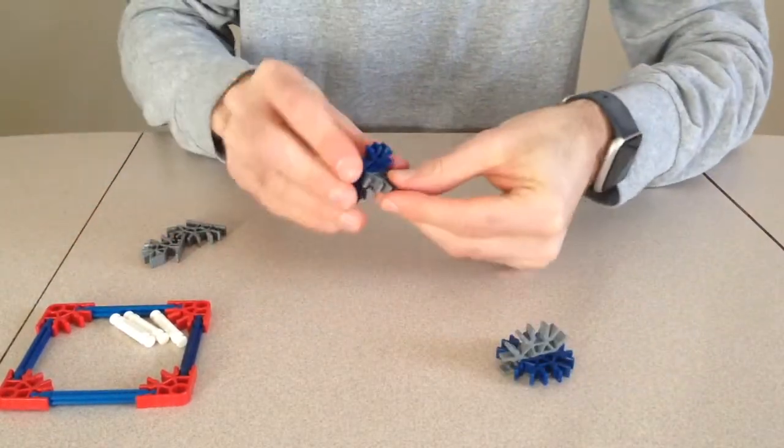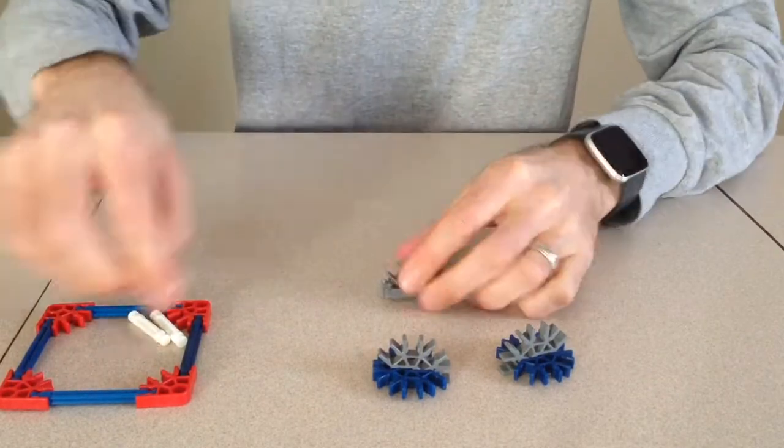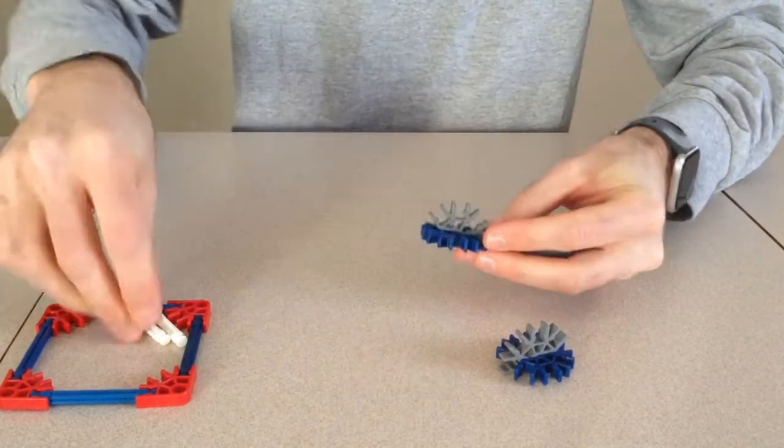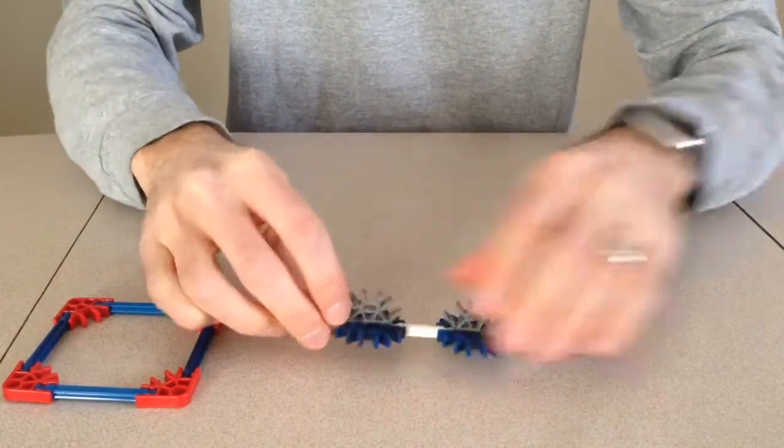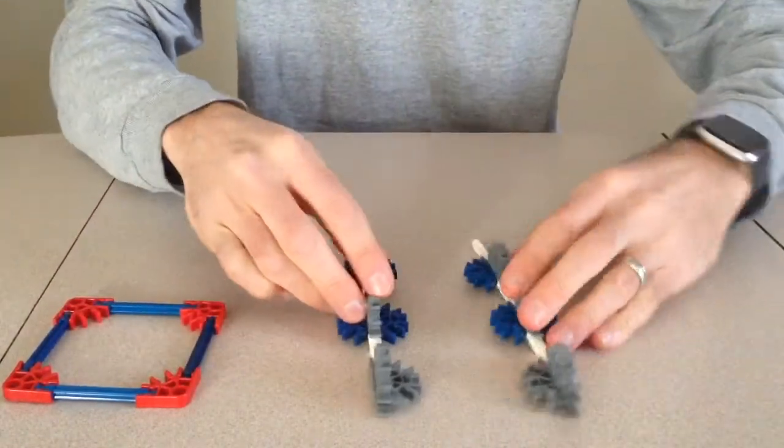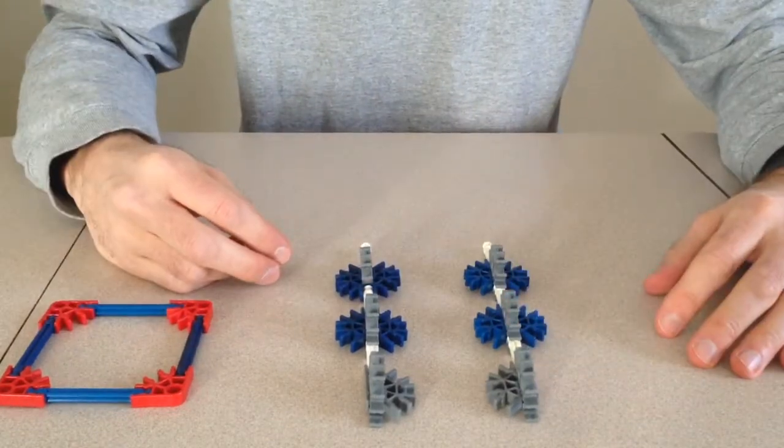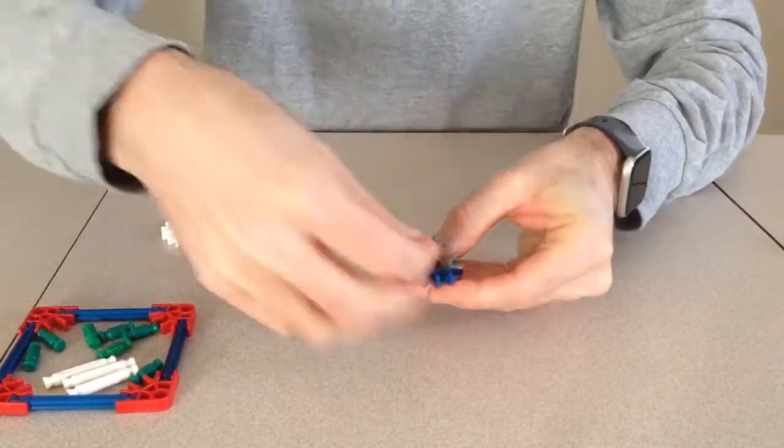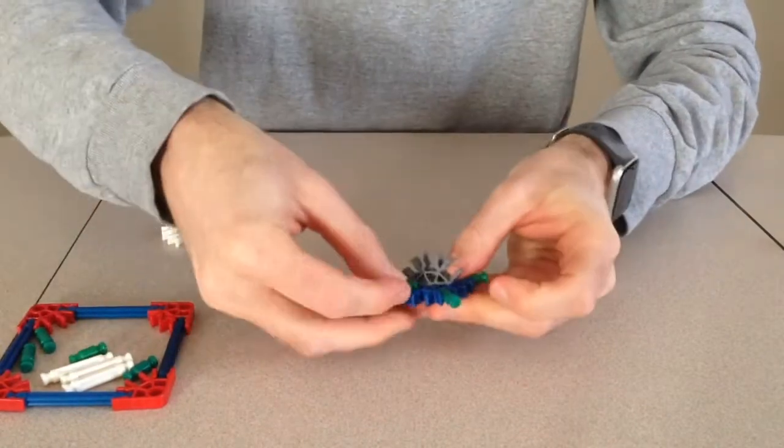First, I will assemble the bottom of the jet ski. I will need to make the right side and then the left side. Now, I can make the bottom part, which will be used to join the two sides together.